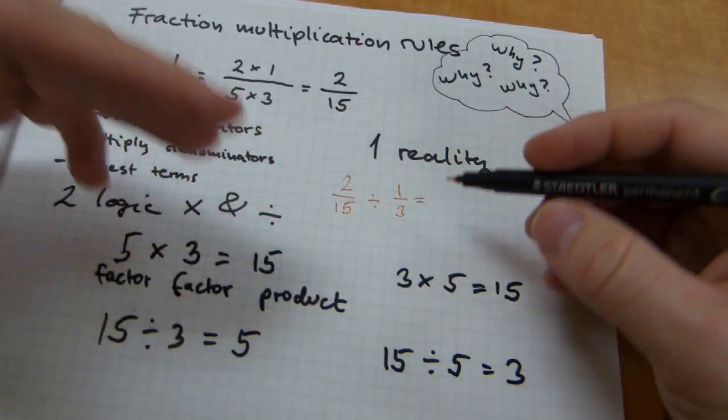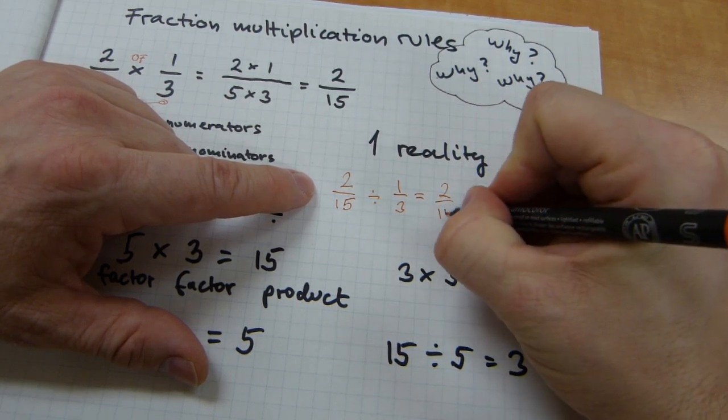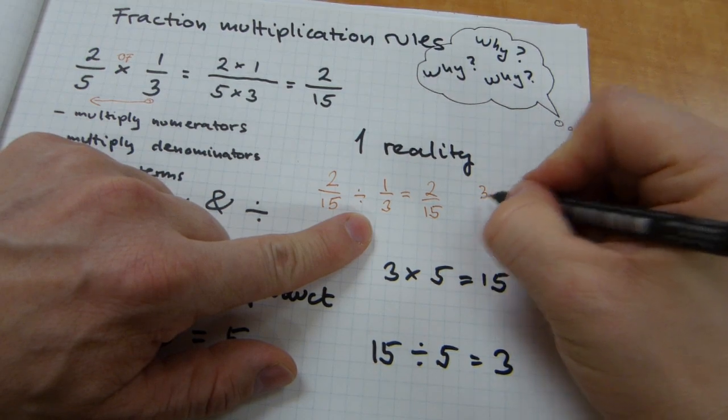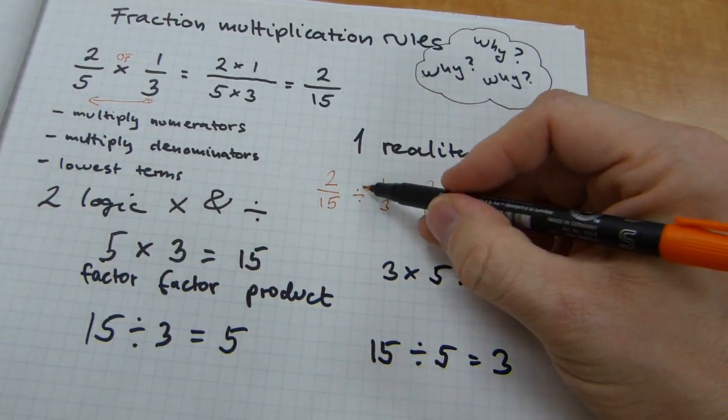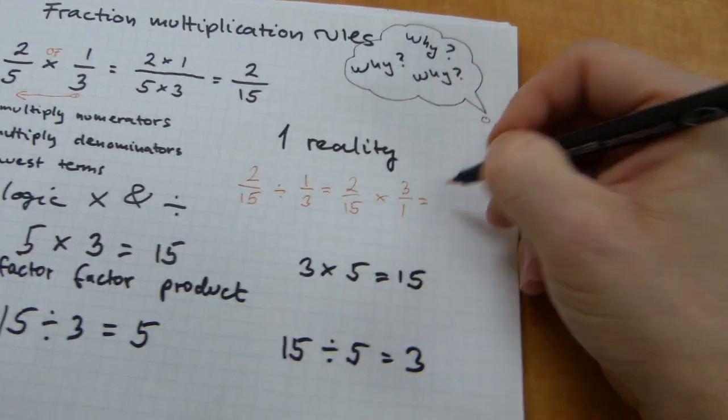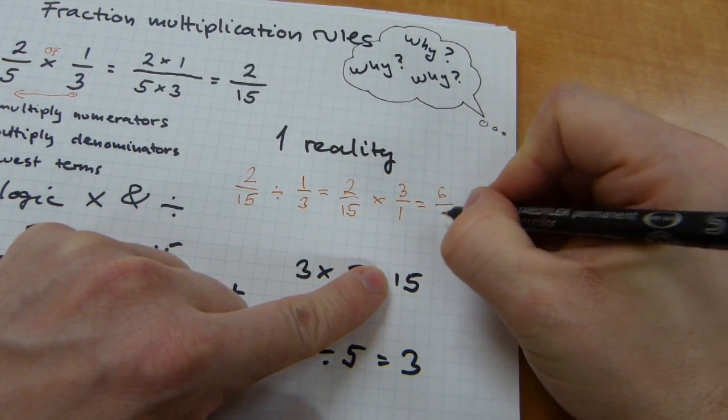Now, how do we do fraction division? Fraction division has its own rules, and it says that you take the first number, you flip the second number upside down, for another weird reason, and the division symbol here gets replaced with a multiplication symbol, and then you continue as a multiplication.